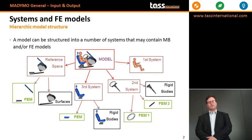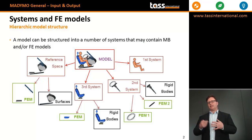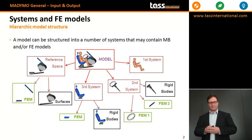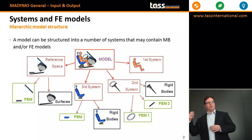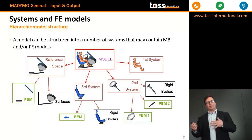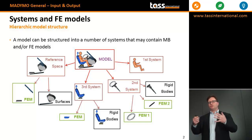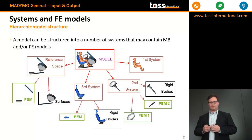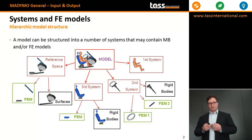A model in Madimo consists of several systems and FE models that have a specific interaction with each other. For example, a model in Madimo can consist of an occupant system with a vehicle environment, an airbag and a belt system. In these systems, the user can specify multi-body and FE components. Each system can contain multiple FE models.